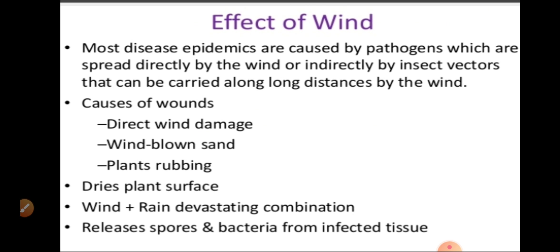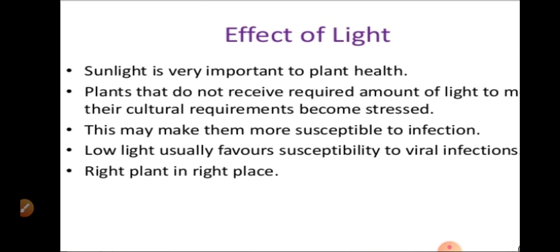The effect of wind is also an important atmospheric factor. Most disease epidemics are caused by pathogens spread directly by the wind or indirectly by insect vectors that can be carried long distances by the wind. Wind causes wounds through direct damage, wind-blown sand, and plant rubbings. It also dries plant surfaces. Wind plus rain is a devastating combination that releases spores and bacteria from infected tissues.